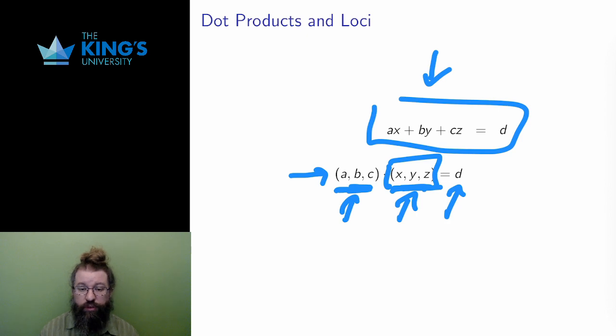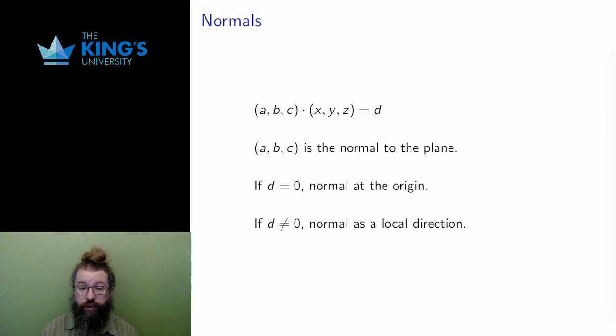This means that to produce the equation of the plane, I need a vector, a, b, c, and one other constant, d. The vector a, b, c is called the normal to the plane.